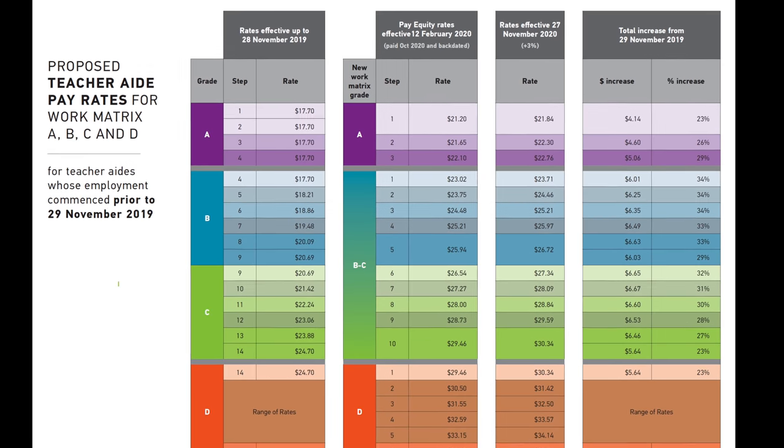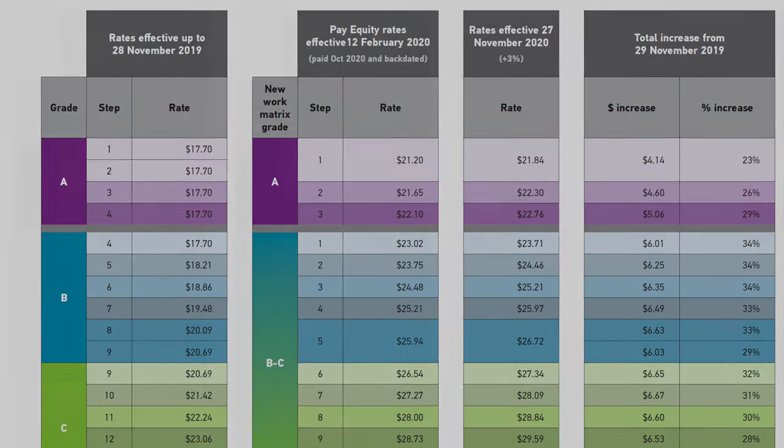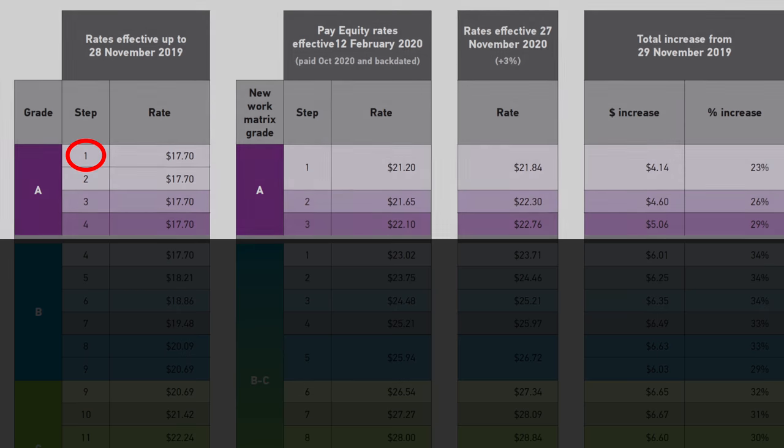Everyone who was a teacher aide prior to November 29, 2019 will automatically move on to the new grades and steps. This will be based on your grade and step under the previous collective agreement. Some of these are easy to follow — if you're on grade A step 1 under the previous agreement, you'll be put on grade A step 1 under the new pay rates.